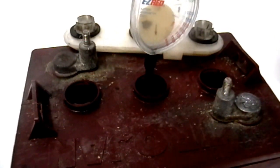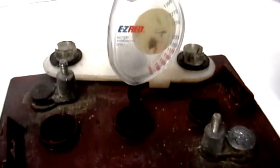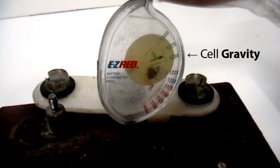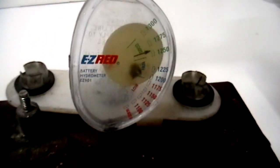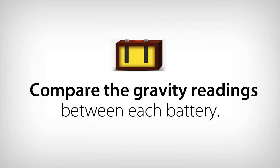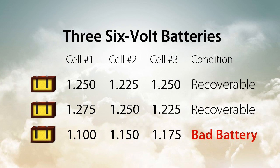Read the dial to get the specific gravity for that cell. Measure and record the specific gravity of each battery cell. Compare the specific gravity readings for each battery. If a battery has a difference of more than 0.05 between the cells, that battery has an open cell.